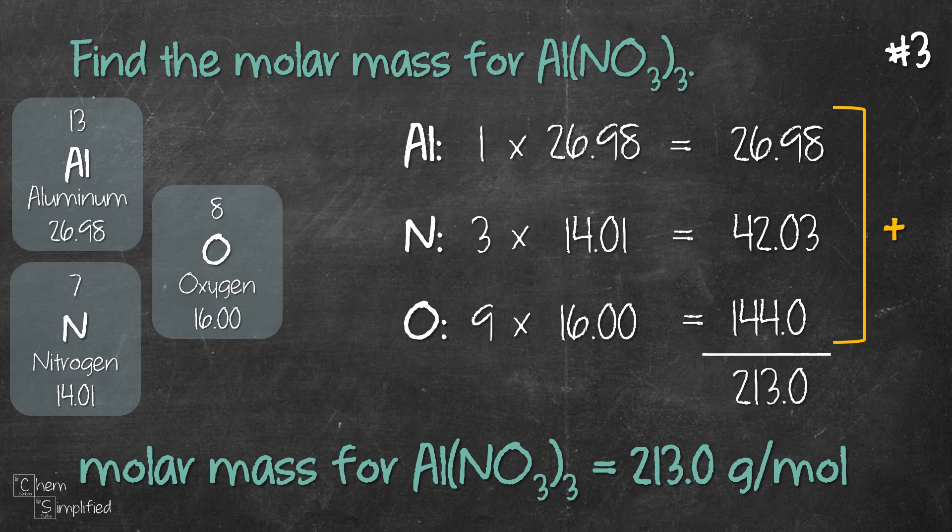To recap, when finding the molar mass, what we need to do is find the atomic mass for each element and then we multiply with the number of atoms. Then we add up all these numbers and we get the molar mass.